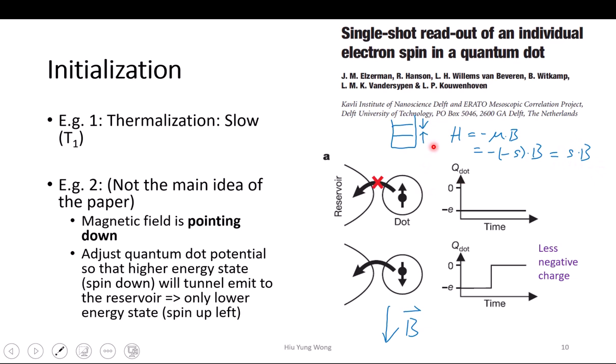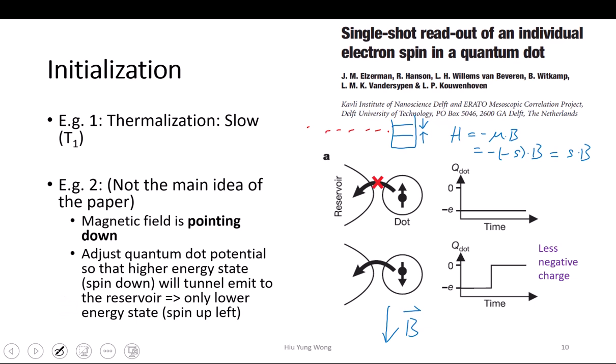So if they are in opposite directions, this is negative and you have lower energy. That is why in this paper, spin down actually has higher energy. Then what can we do? We just adjust the quantum dot potential — use a capacitor to bias the quantum dot, make it higher and lower, or change the reservoir energy, so that the higher energy state can tunnel out but the lower energy state cannot.